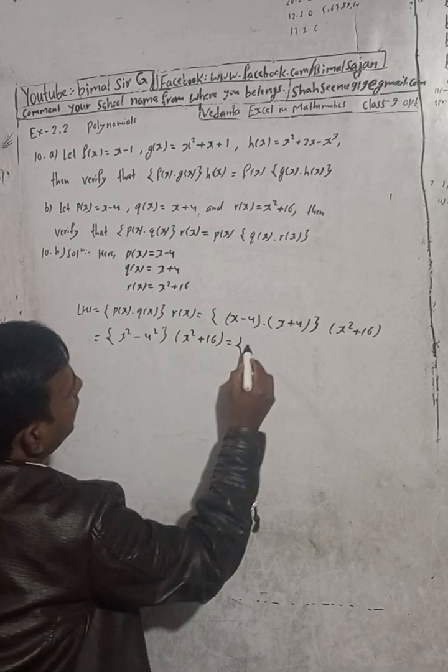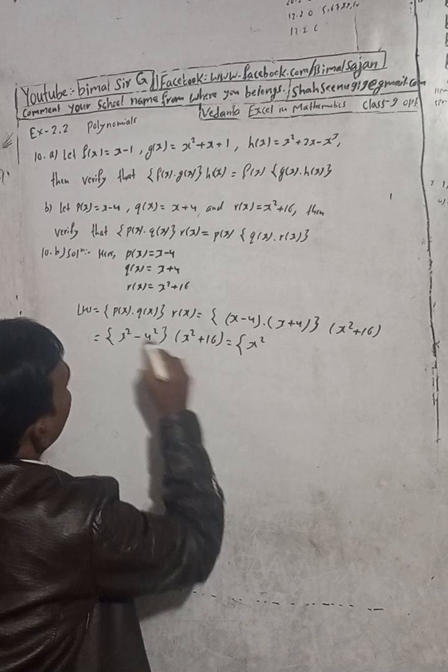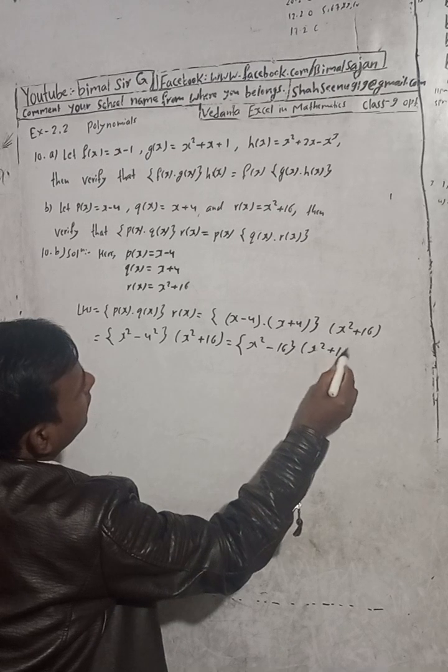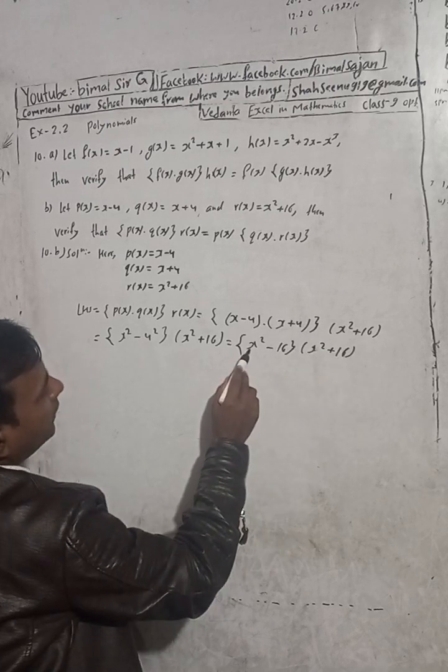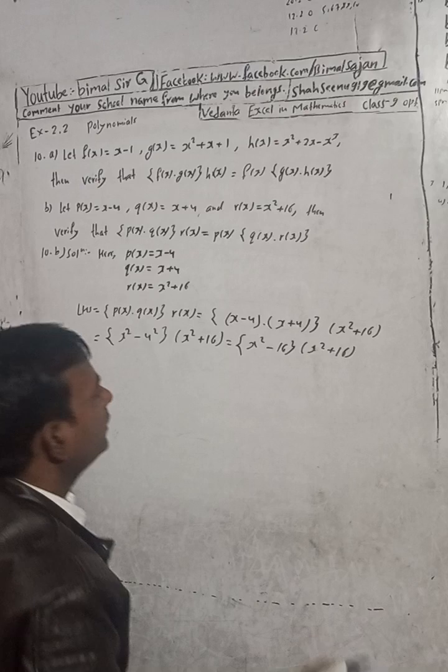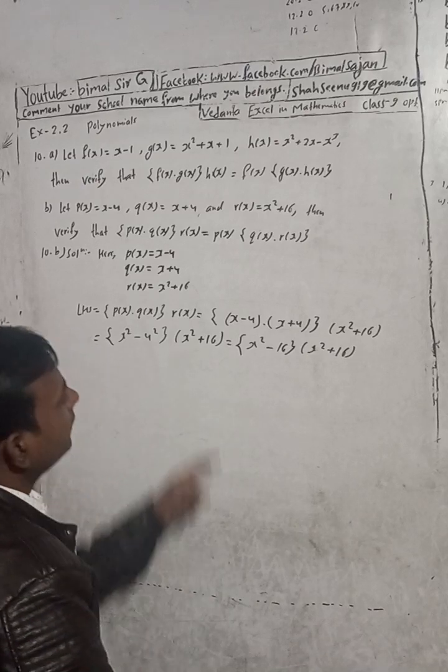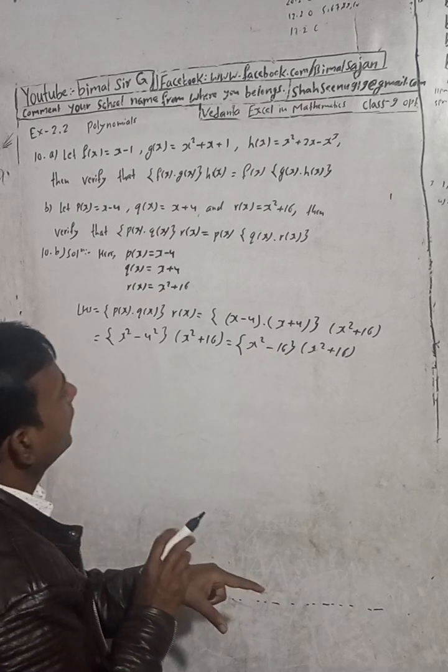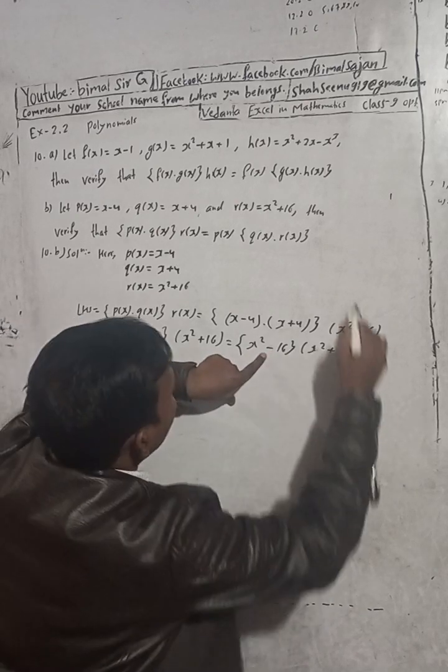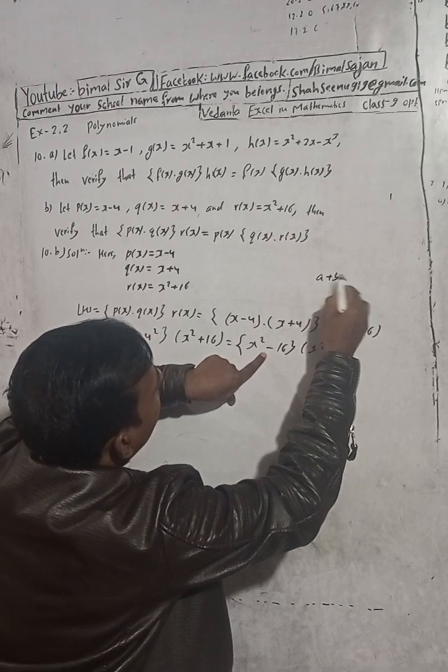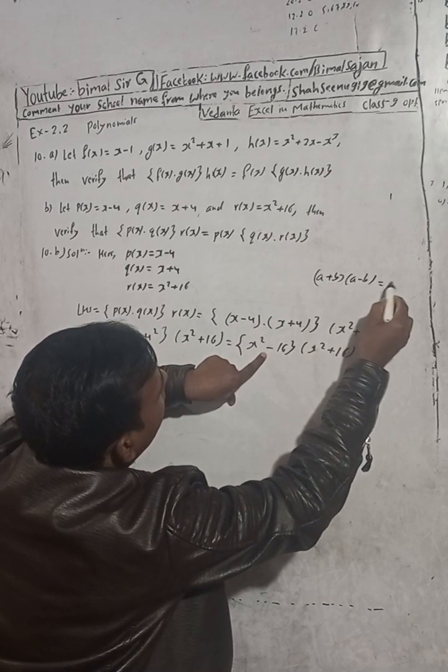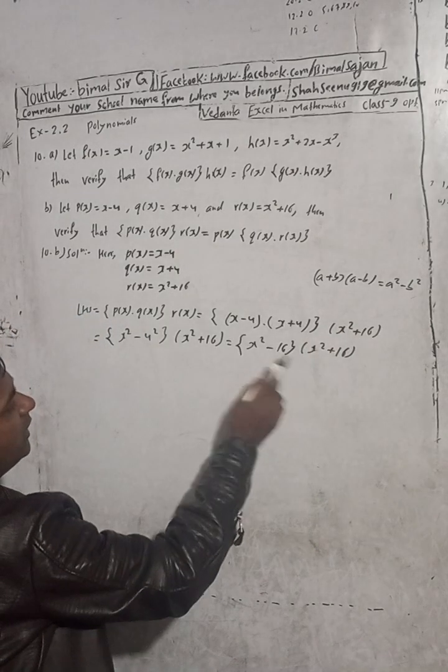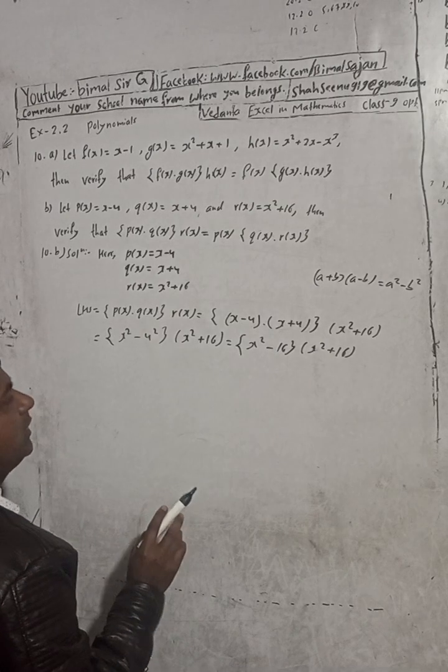So put this like this. And now this is here x square plus 16. So x, this is curly bracket, x square minus 4 square, plus 16. And then this is here a minus b into a plus b. This is the formula, so we can write what formula: this is a square plus b into a minus, a square minus b square.